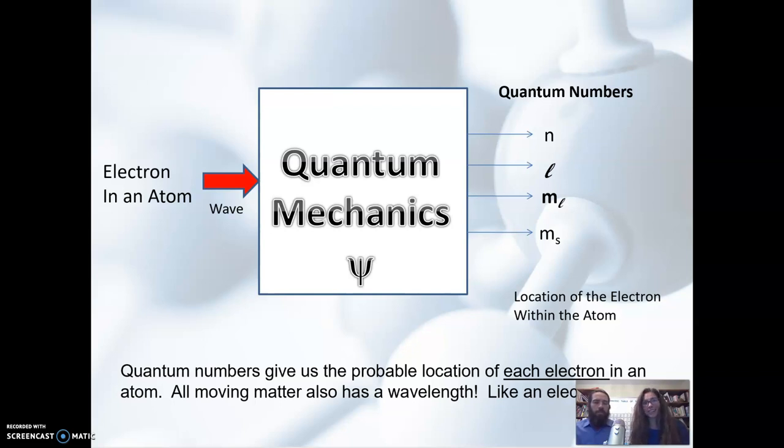Well, particles, as it turns out, when they're moving also have a wavelength. They also have wave-like properties. So if we treat the electron like a wave and use quantum mechanics, and this is outside the scope of general chemistry, so we just call it a box. We put the electron into the quantum mechanics box and the calculations that are involved with that spit out four different quantum numbers.